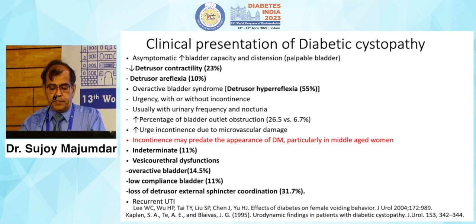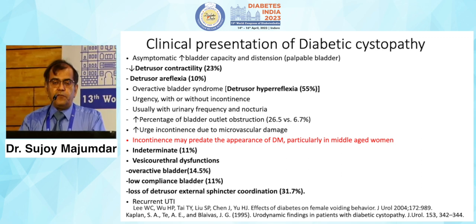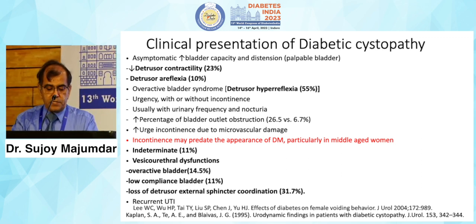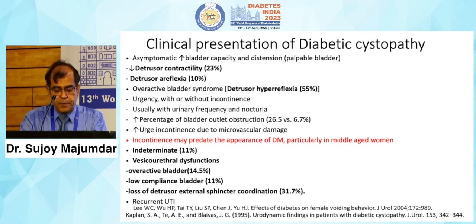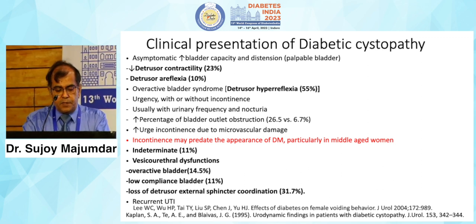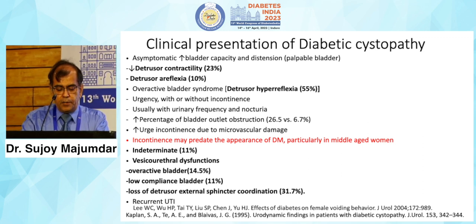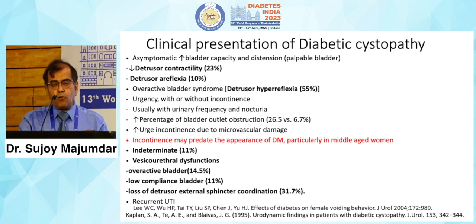Diabetic cystopathy is asymptomatic in the vast majority of patients. Symptom-wise, the commonest presentation is detrusor hyperreflexia, present in around 55 percent of patients; reduced detrusor contractility in around 23 percent; and complete adreflexia in around 10 percent. Patients present with urgency with or without incontinence, and there is an increased percentage of bladder-outlet obstruction in diabetic cystopathy. Urge incontinence is a reflection of microvascular damage to the bladder mucosal membrane.